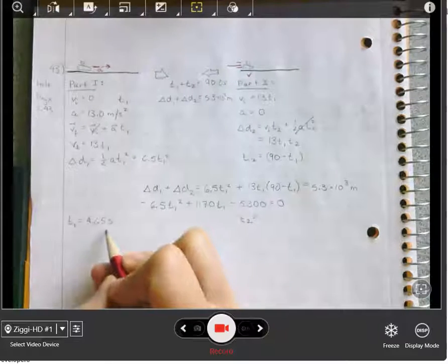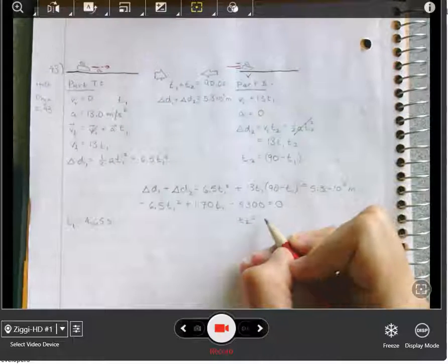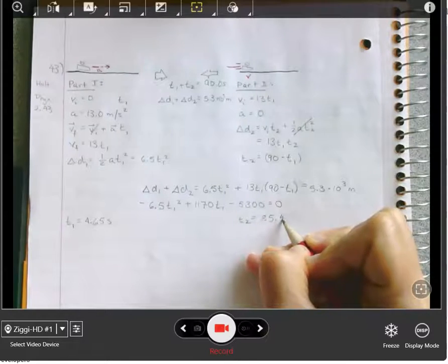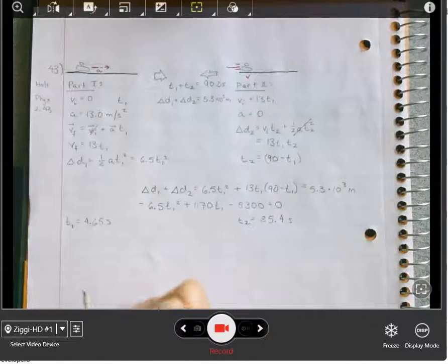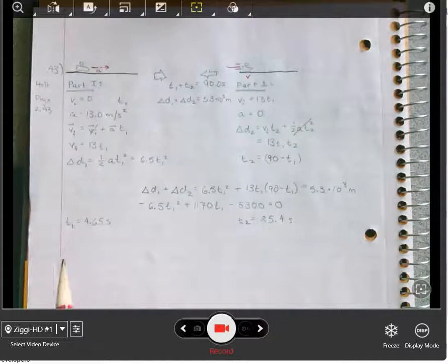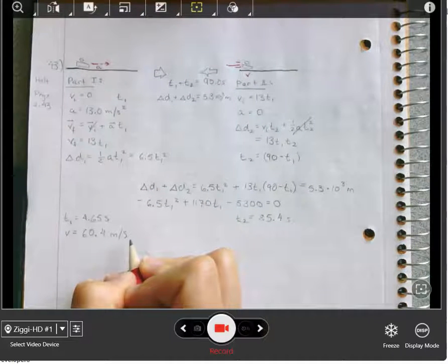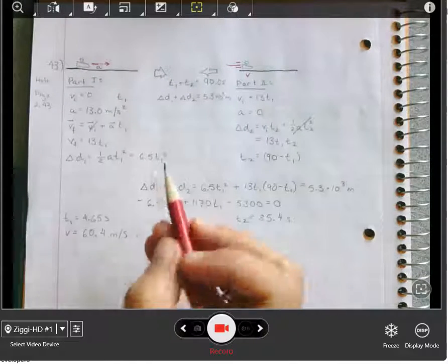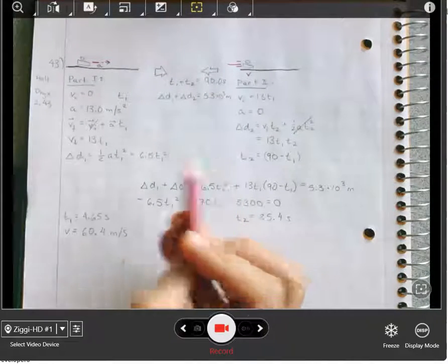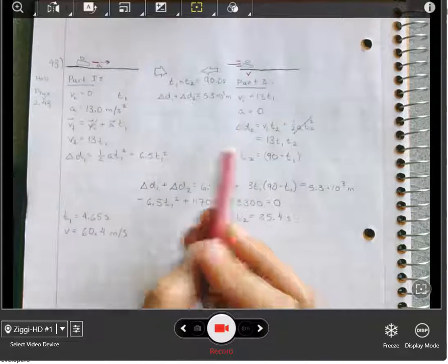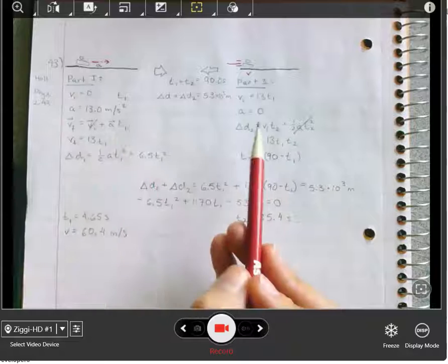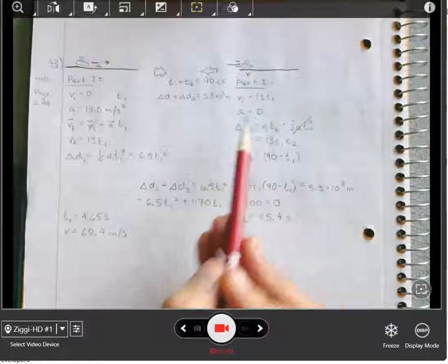This gives you t1 is 4.65 seconds, t2 is the remaining 85.4 seconds, and v, as per above, is 13t1, about 60.4 meters per second. Notice how helpful it is to do the problem in two parts where you have two sets of data and two different sets of equations, one for a constant acceleration and one for zero acceleration.